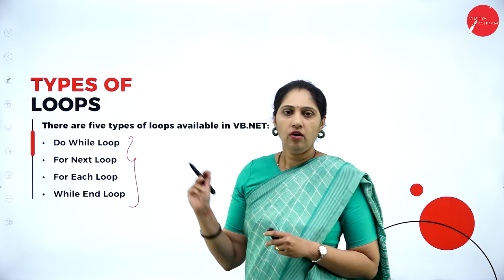Do-while loop: 'do' means whatever the condition, execute at least once. Then depending on the condition, execute more. The syntax in VB.NET is: write 'do,' then your code, then 'loop while condition.' If the condition is true, it goes back to check again — until the condition is false. When false, it comes out of the loop. For-next loop: in C-sharp we write 'for(int i = 0; i < 5; i++)' with flower brackets. In VB.NET the syntax is different — no flower brackets. We write 'for,' specify a counter or i, then 'next.' Concept is the same: initialize the counter, check condition, execute code, update counter, repeat until false.